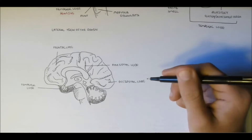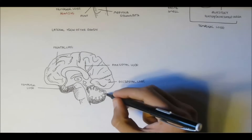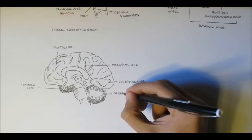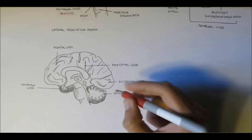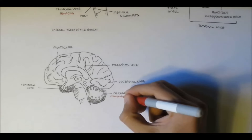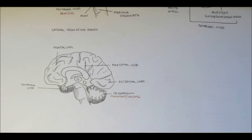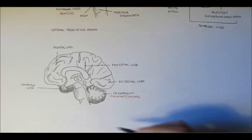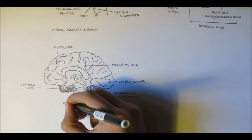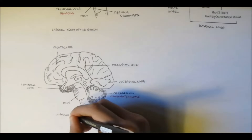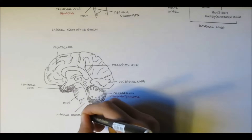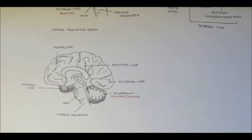The cerebellum, which I mentioned previously, is important in movement, balance and coordination — so we don't fall down, basically. And then we have the pons and medulla oblongata, which I will discuss later on.